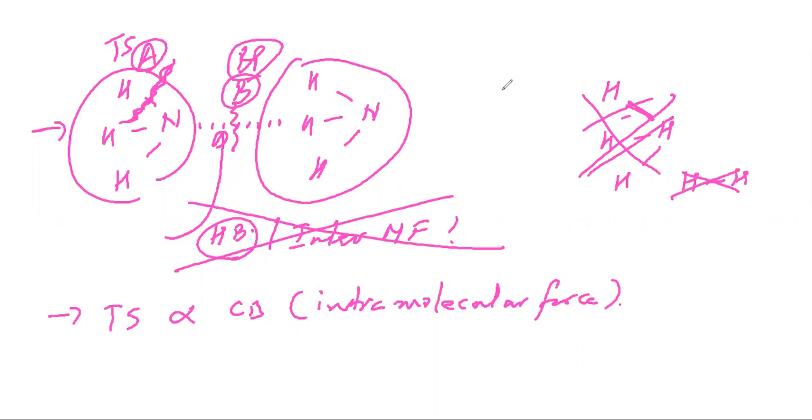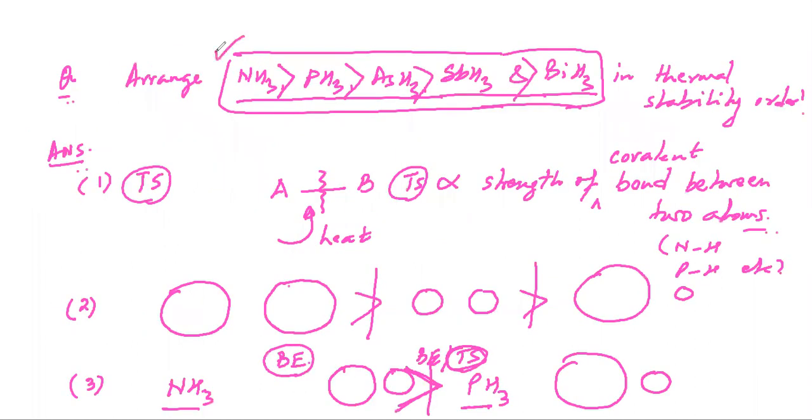So let's quickly revise what we have decided: ammonia has the highest thermal stability and subsequently it is constantly decreasing. We will quickly revise and if there is a question we will address it right away.